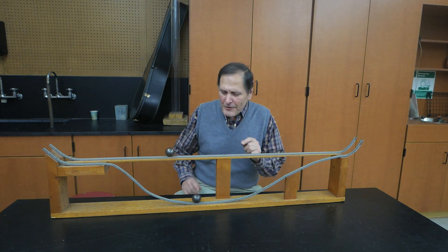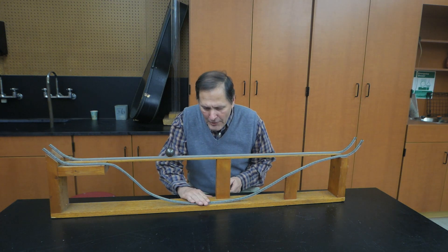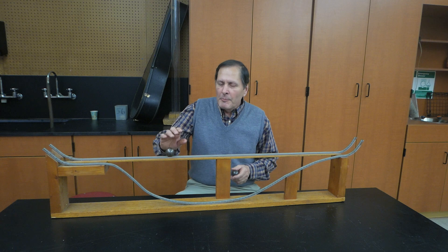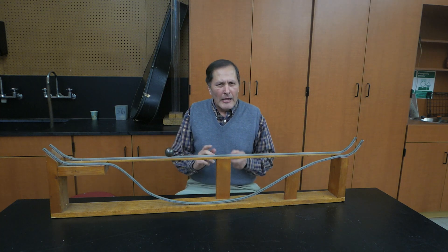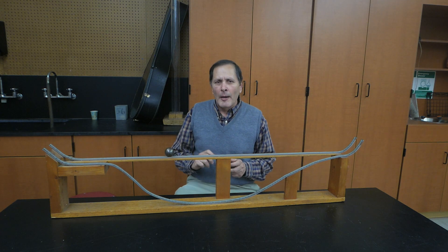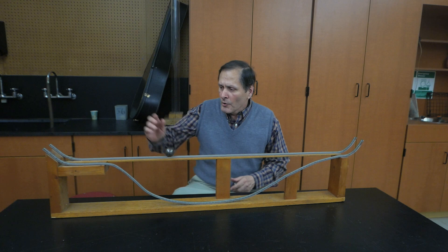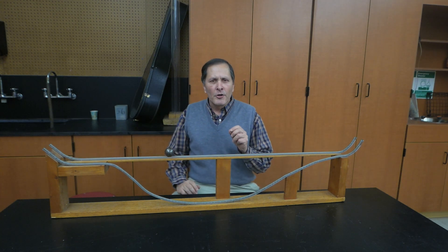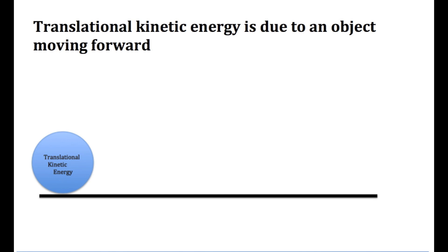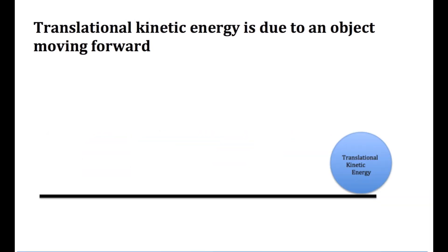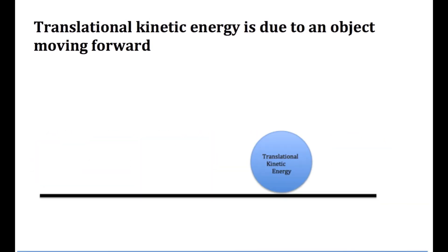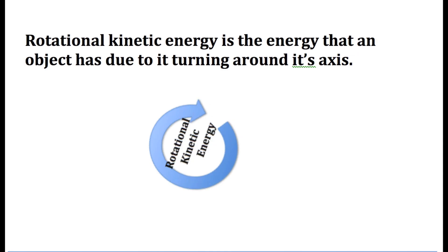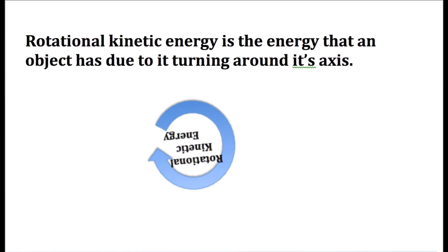Now another question asked: is there a limit to how low this track could drop and still have the ball reach the opposite side before the ball on the high road track? And the answer is yes, and it has to do with the type of energies we're changing it into. We're changing from gravitational potential energy into two types of kinetic energy: translational kinetic energy, due to the object moving forward, and rotational kinetic energy, which is energy that an object has due to its turning around its axis.